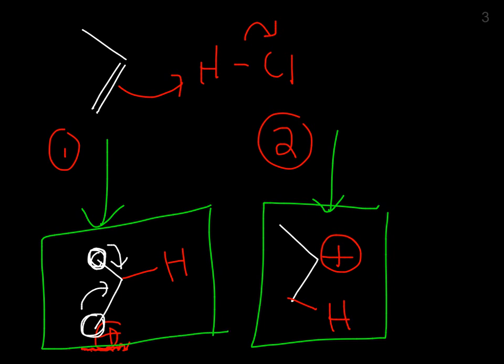This carbocation over here is more stable than this one, because this carbocation has two methyl groups donating electron density, making it more stable. This carbocation only has one methyl group donating electron density. So this is by far, number two is by far your favorite result.